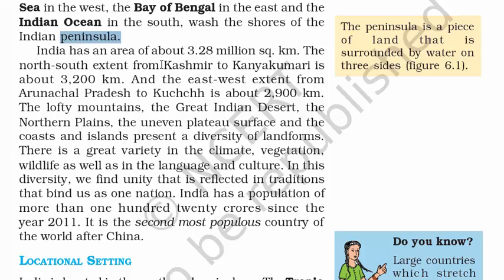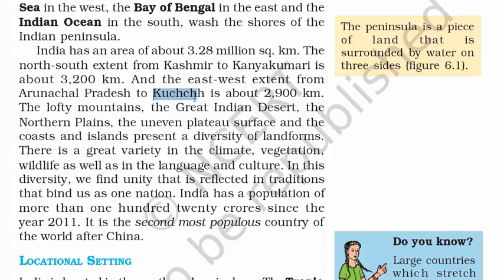The distance between Kashmir and Kanyakumari is 3,200 kilometers — that is the vertical line from north to south. East to west, from Arunachal Pradesh to Kutch, is 2,900 kilometers. So 2,900 and 3,200 should be easy to remember. Arunachal Pradesh is the eastern border and Kutch, which is in Gujarat, is the western border.